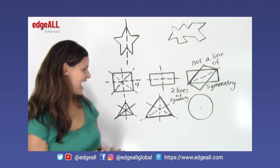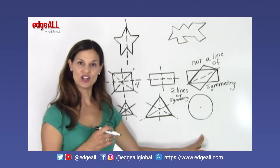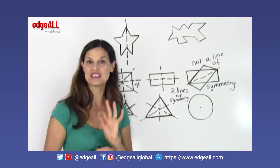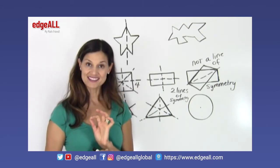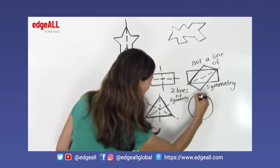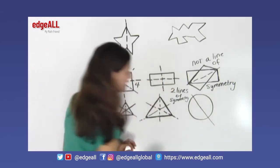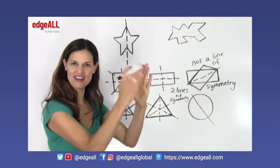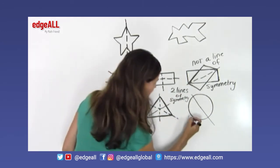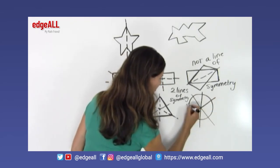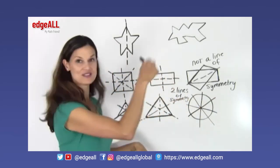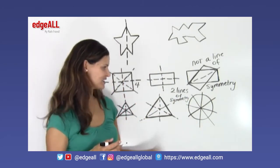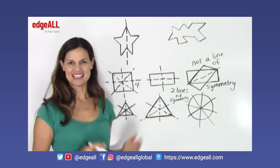The last shape we'll look at is the circle. A circle has an infinite number of lines of symmetry. Any line that passes through the center of a circle will be a line of symmetry. I could fold my paper in half along any such line and the two sides would match up. I could do that an infinite number of times around my circle, so circles are symmetrical shapes with an infinite number of lines of symmetry.